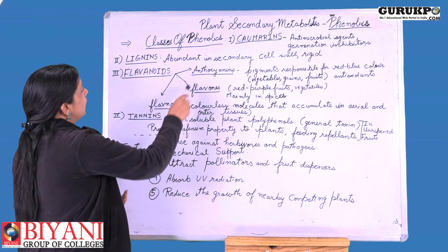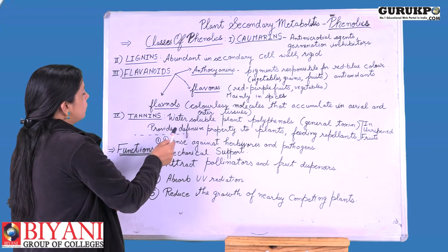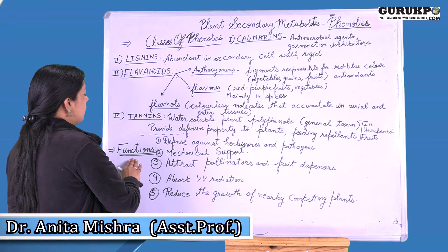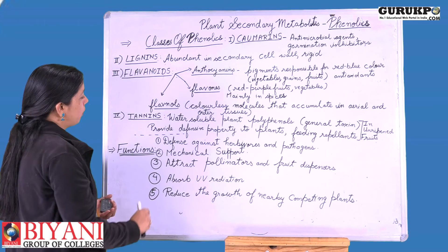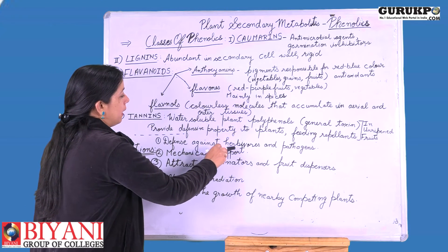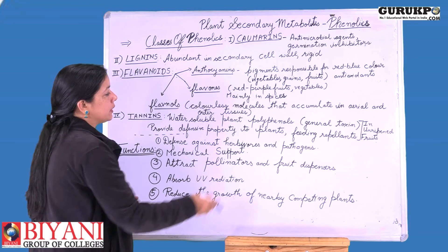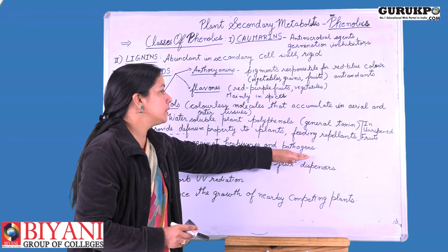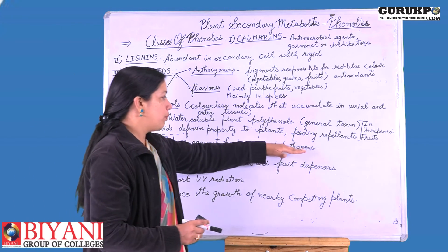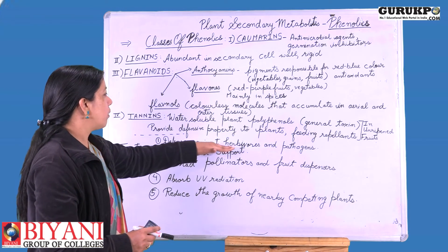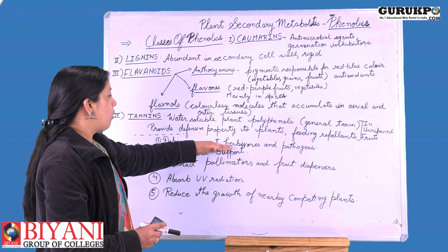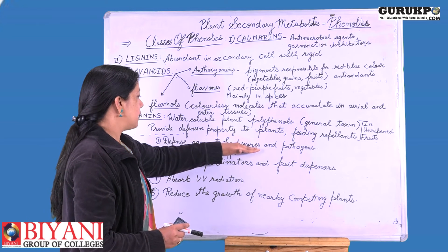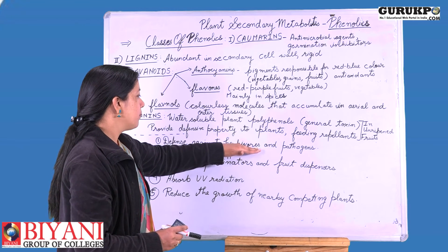These are the major classes of phenolics. The basic functions performed by phenolics in the plant include: first, defence against herbivores and pathogens. Because they are antimicrobial, they provide defence against pathogens, and because they are toxic, they also provide defence against grazing animals and herbivores, thereby protecting the plant against predators.